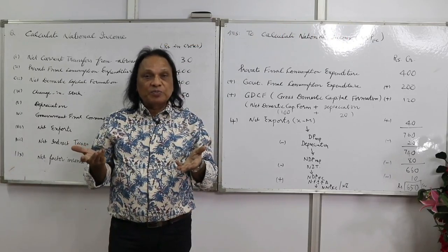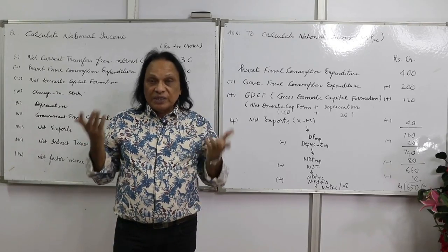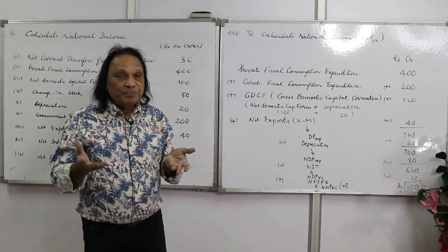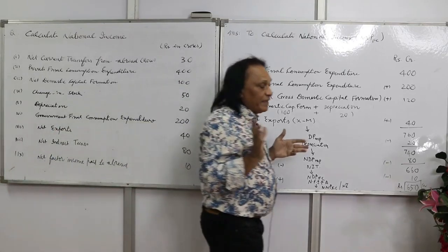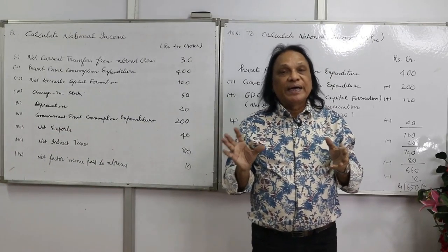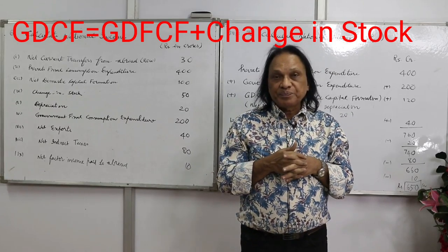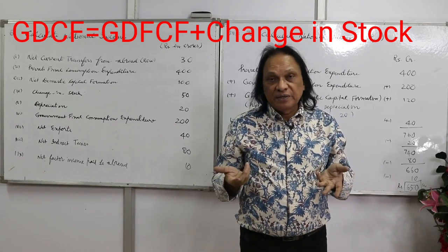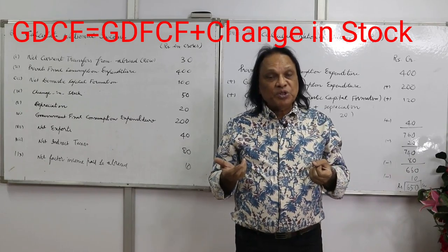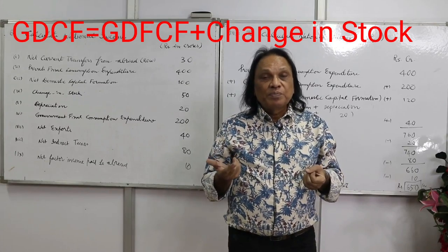From GDP at MP, if you subtract depreciation, you get NDP at MP — net domestic product at market price. From NDP at MP, if you subtract NIT (net indirect taxes, which equals indirect taxes minus subsidies), you get NDP at factor cost, which is nothing but domestic income. To this you add NFIA — net factor income from abroad — to get national income.